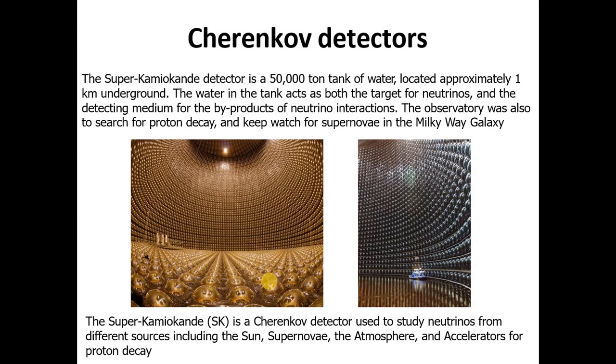And the main type of Cherenkov detector, the Super-Kamiokande detector, is a 50,000 ton tank of water located approximately one kilometer underground. The water in the tank acts as both the target for neutrinos and the detecting medium for the byproducts of neutrino interaction. The observatory also is used to search for proton decay and keep watch for supernovae in the Milky Way galaxy. In the image is a Super Cherenkov detector which is used to study neutrinos from different sources including the sun, supernova, the atmosphere, and accelerators for proton decay.